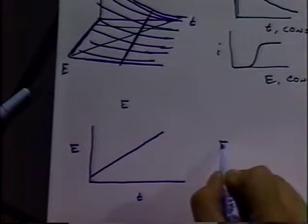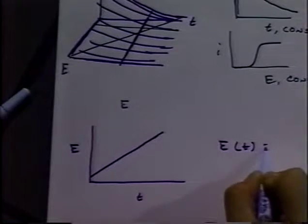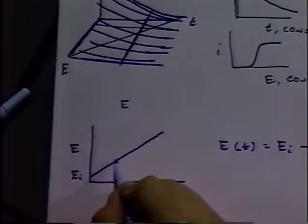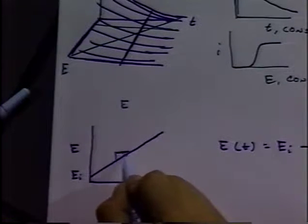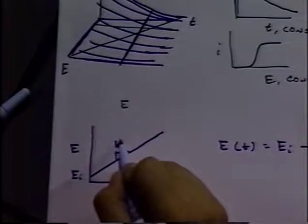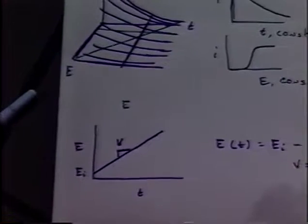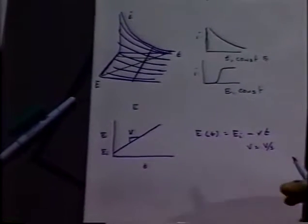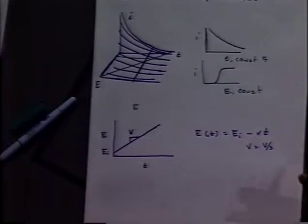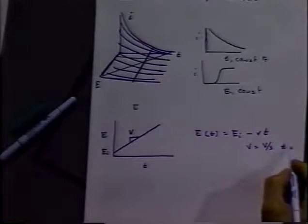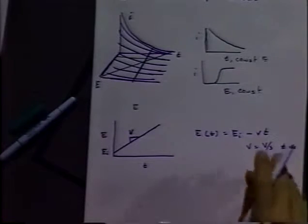The potential as a function of time equals our initial potential minus Vt, so the scan rate is V. V is typically in volts per second, sometimes millivolts per second. In older literature you might see volts per minute or millivolts per minute, but now it's standard to use volts per second with T in seconds.